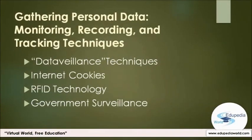Data gathering techniques include monitoring, recording, and tracking techniques. Collecting and recording data about people is hardly new — from earlier years, governments have collected and recorded census information. Not all data gathering and recording practices have caused controversy about privacy. However, cyber technology makes it possible to collect data about individuals without their knowledge and consent. Internet cookies, RFID technology, and government surveillance are considered controversial ways in which cyber technology is used to gather and record personal data.